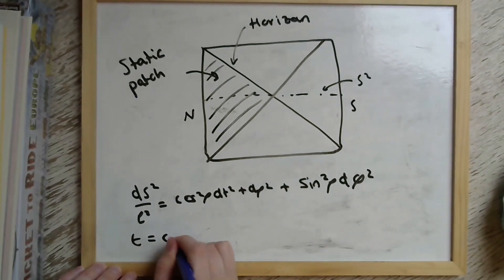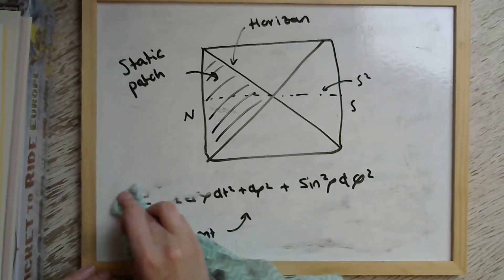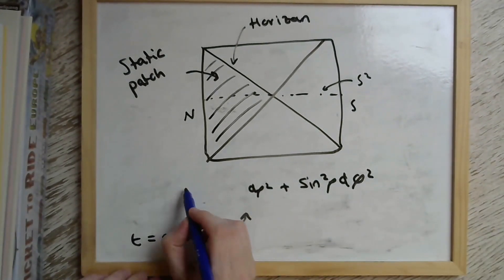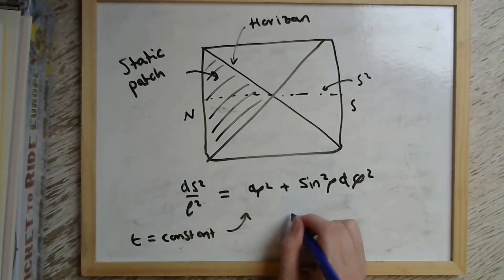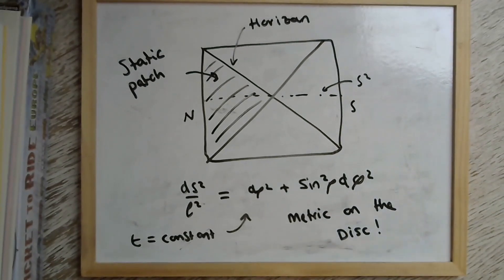And we can also take constant time slices in this static patch metric. And of course, we then lose this dT² piece and we're left with the topology of a disk. And that tells us that we can think of the static patch in de Sitter as being like a disk evolving in time or like a disk times the real line.